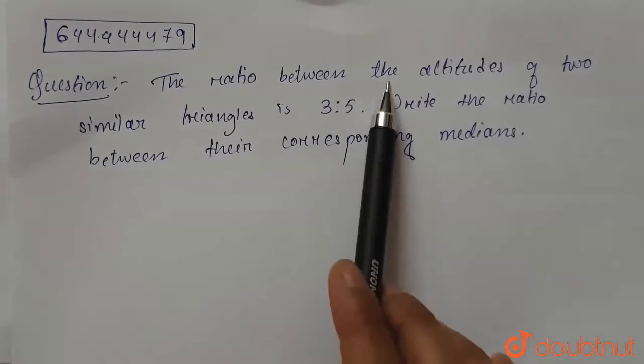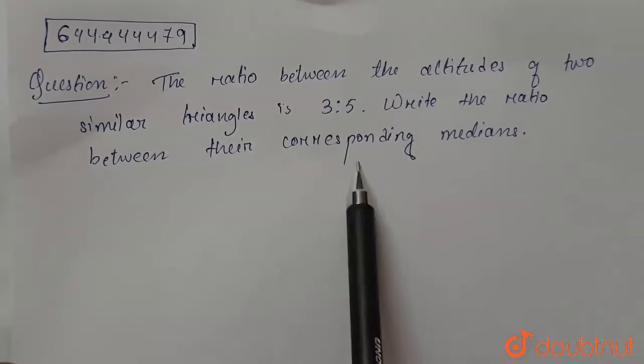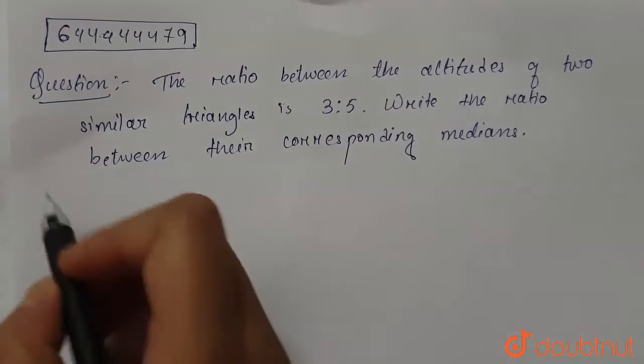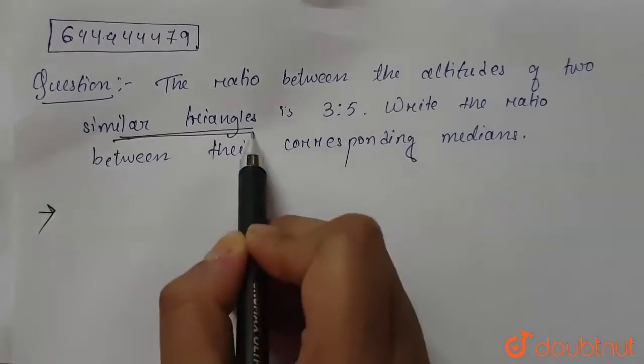is the ratio between the altitudes of two similar triangles is 3:5. Write the ratio between their corresponding medians. So in the question, we are given that the ratio between the altitudes of two similar triangles